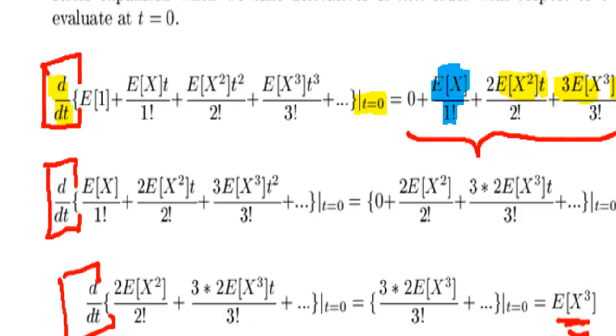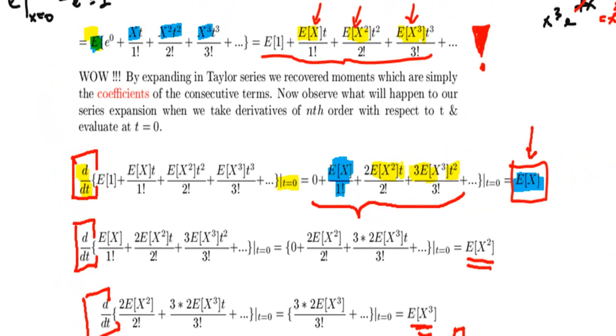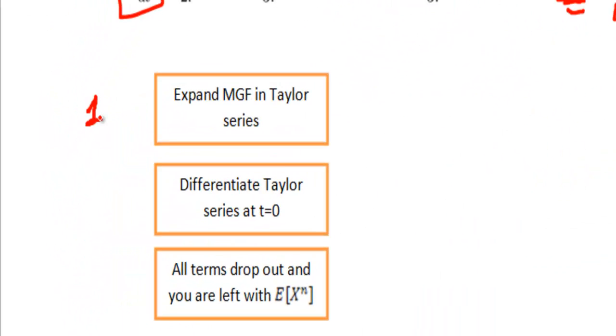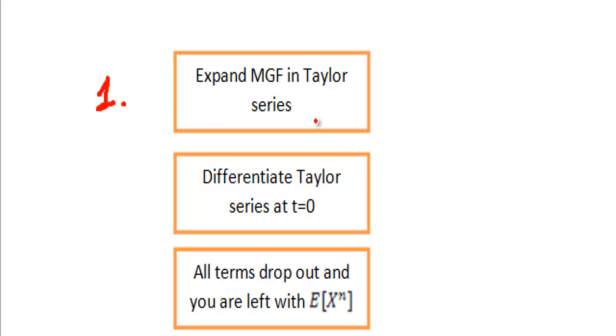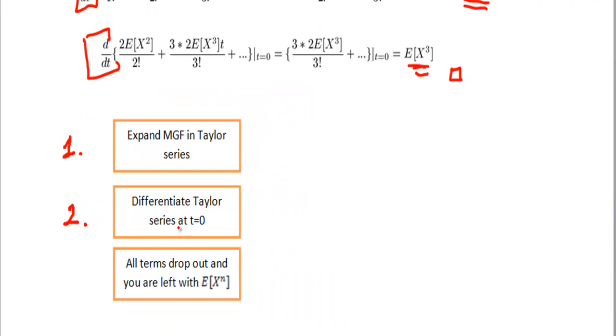So there you go. Well, we've proven the key property of the moment-generating function and we proved it in the following way. We first expanded the MGF in Taylor series, then we differentiated at zero. We took derivatives first, second, third, and fourth derivative and we differentiated at zero. And we noted that all terms dropped out except for one term which remains. And the term which remains corresponds to the derivative you've taken.